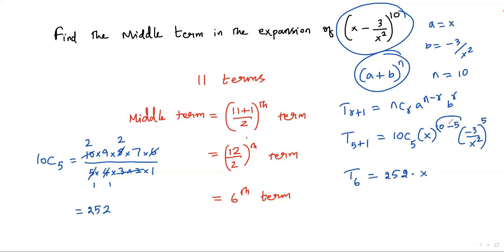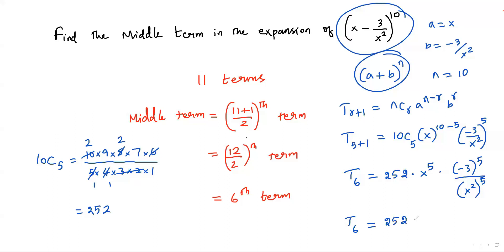So T6 = 252 · x^5 · (−3/x²)^5. Since 5 is the common exponent for the fraction, it applies to numerator and denominator separately: (−3)^5 = −243 over (x²)^5 = x^10. So T6 = 252 · x^5 · (−243/x^10).